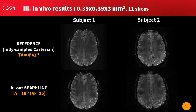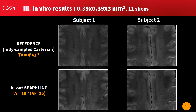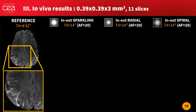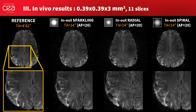Here are some brain images prospectively acquired with the SPARKLING trajectories for a high in-plane resolution of 390 microns. Compared to the reference acquisition that lasted almost 5 minutes, you can see that the image quality in the 18-second SPARKLING scan was well maintained. A close-up shows that the majority of small vessels were also well preserved. We also compared the SPARKLING method with radial and variable density spiral trajectories for the same sequence parameters, and our results show that SPARKLING yields the best image quality and seems more robust to B0 imperfections compared to the spiral scan, which suffered from important artifacts.